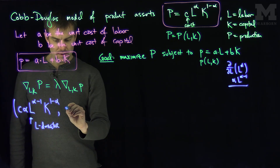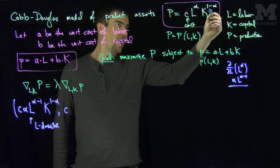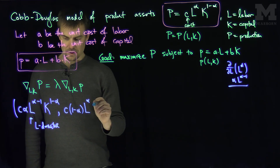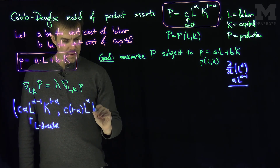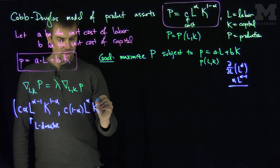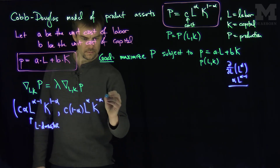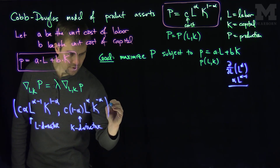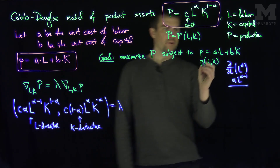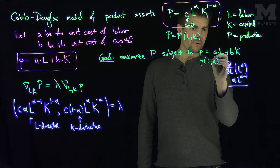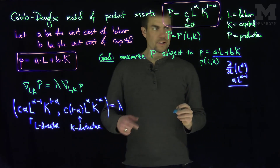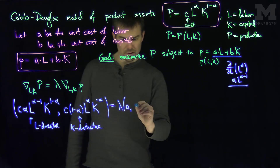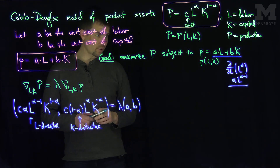Then we do the K-derivative. The K-derivative gives us C times (1-α)·L^α·K^(-α), since L is treated as a constant with respect to K. This equals lambda times the derivative of little p: the derivative with respect to L is A, giving lambda·A, and the derivative with respect to K is B, giving lambda·B.